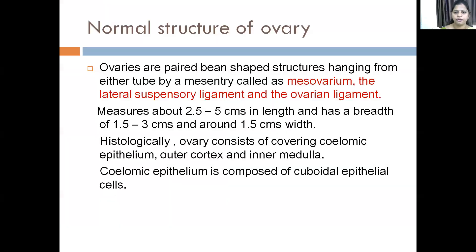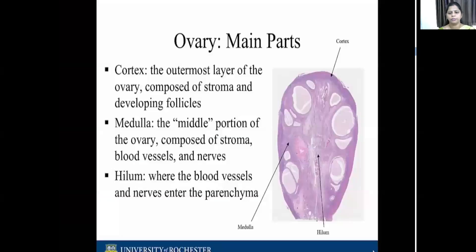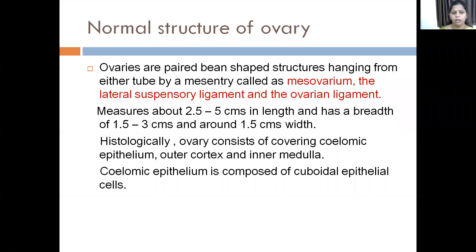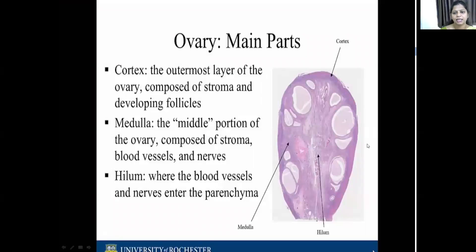The ovary is the female gonad. It consists of an outer celomic epithelium composed of cuboidal epithelial cells. On the cut section, you have an outer cortex containing the follicles and the stroma, the medulla containing the stroma, blood vessels and nerves, and the hilum through which the nerves and vessels enter.